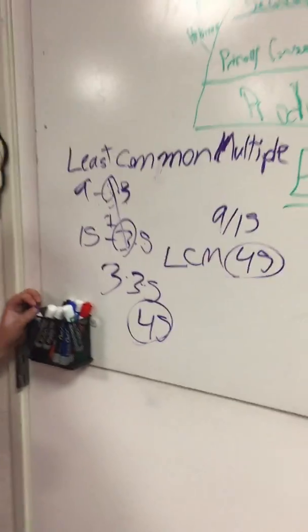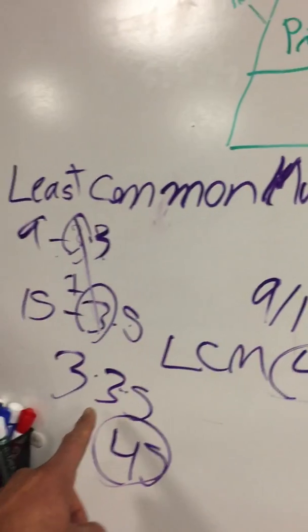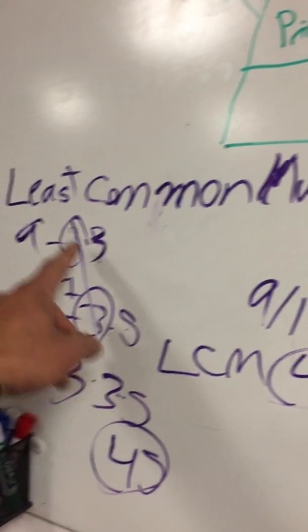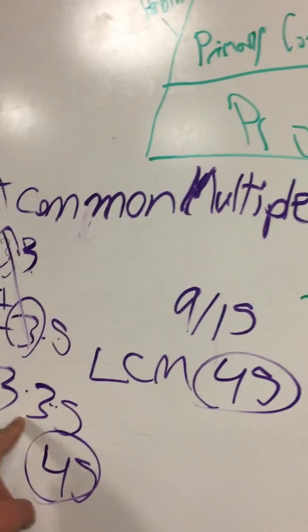I didn't quite understand that actually. So can you say what is this? Why 3, 3, and 5?